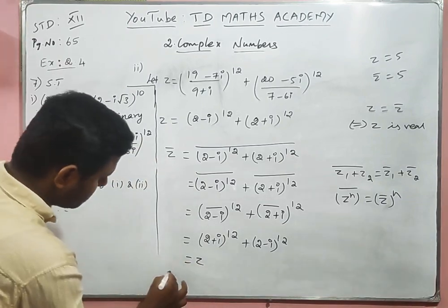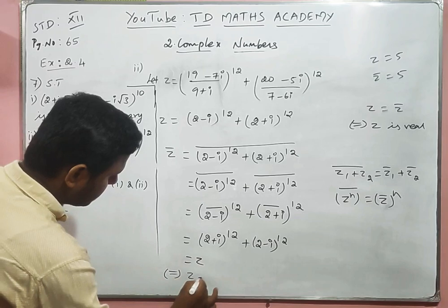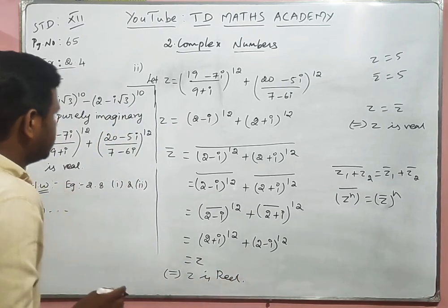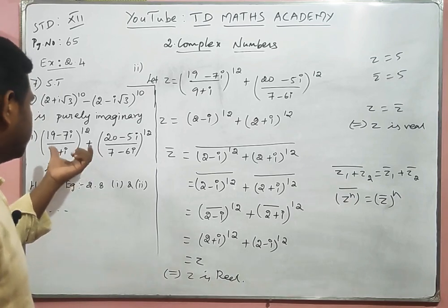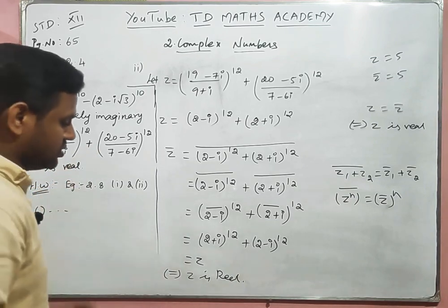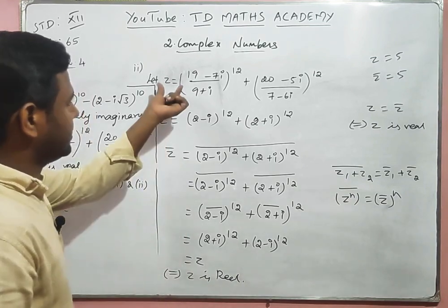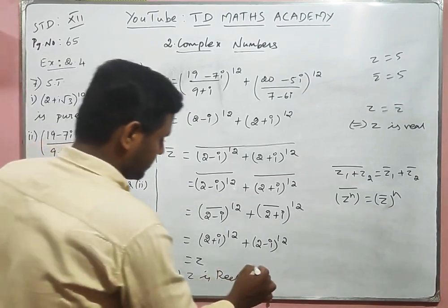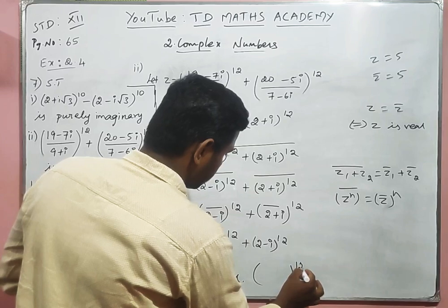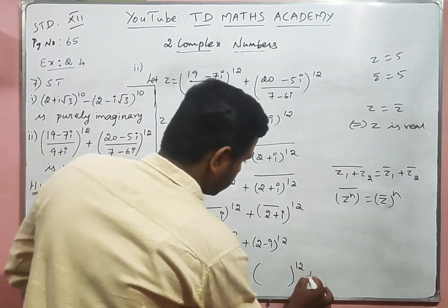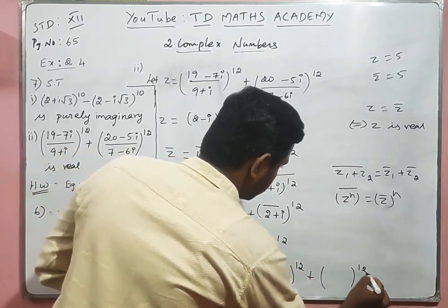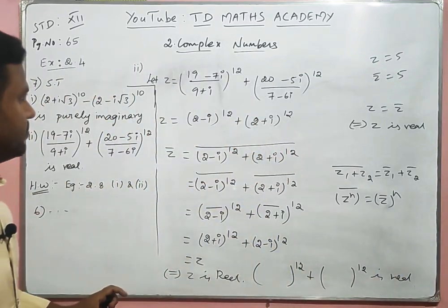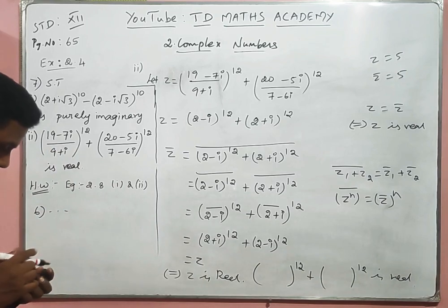Since Z̄ = Z is proved, this implies Z is real. Therefore (2 − i)^12 + (2 + i)^12 is real, which means the whole expression (19 − 7i)/(9 + i) whole power 12 + (20 − 5i)/(7 − 6i) whole power 12 is real. That's the second sum — very easy.